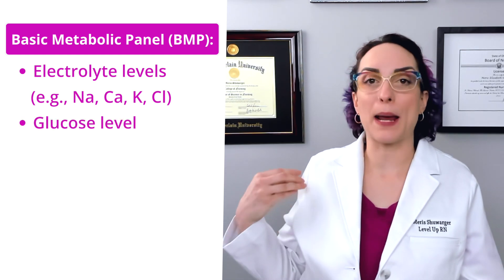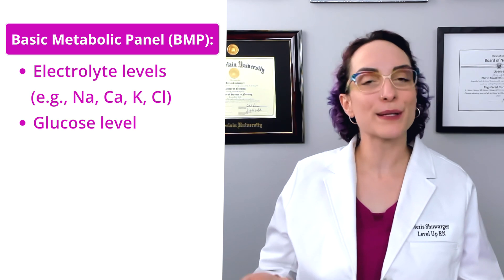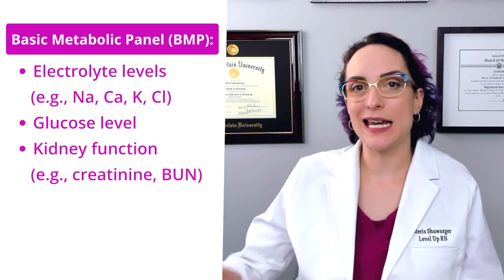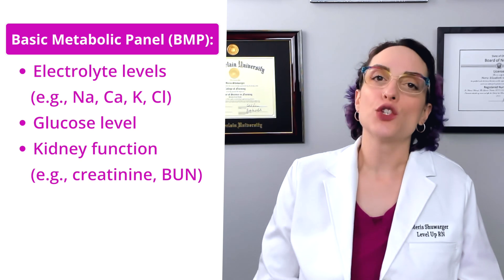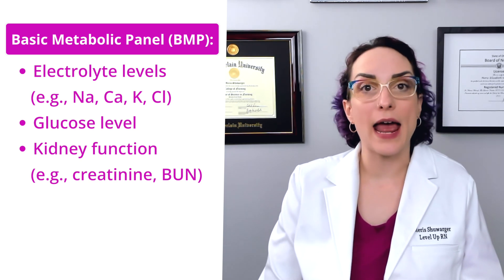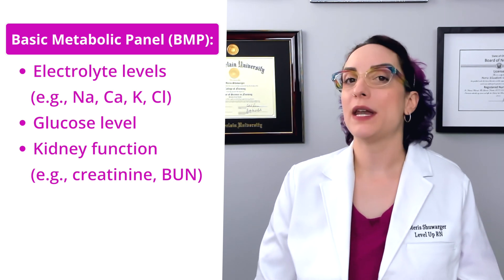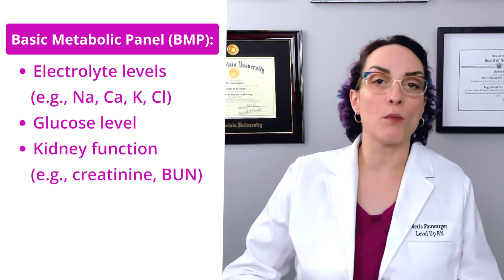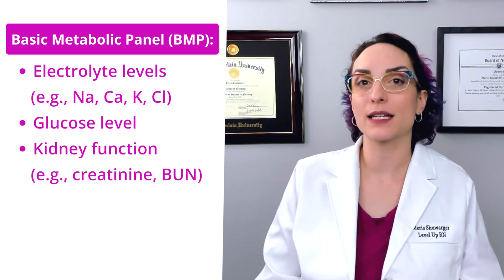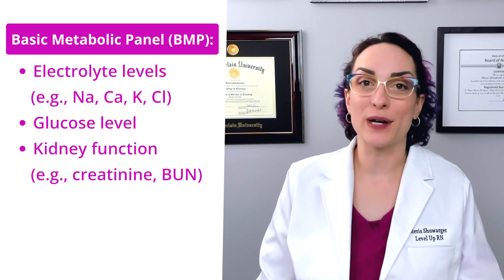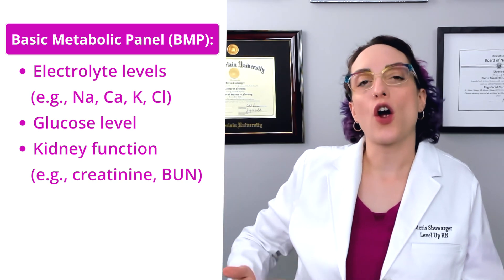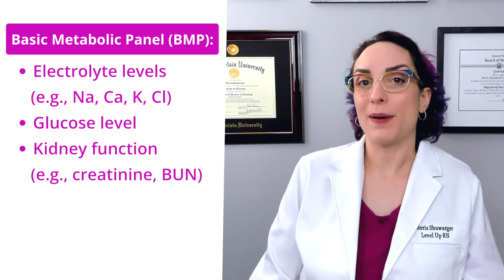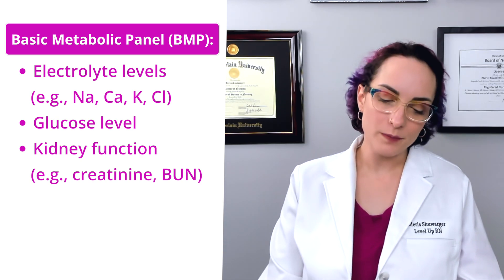The BMP is also going to tell me about the glucose level. Remember, this is a metabolic panel — what does my body need for metabolism? Glucose. And then it's going to talk about the byproducts of metabolism and how well the kidneys are functioning. You may see creatinine and BUN — blood urea nitrogen. Depending on your facility, you may also have an EGFR, an estimated glomerular filtration rate. With certainty, creatinine and BUN will be in there. As those rise, that tells me we are not getting rid of the byproducts of metabolism very well, which gives me concerns — it could also indicate my patient needs more fluid.